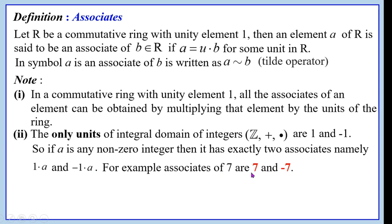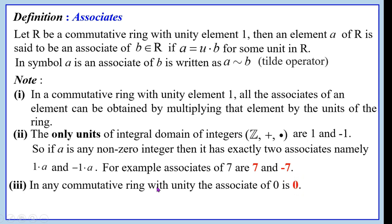The only units of the integral domain of integers are 1 and −1. So if a is any nonzero integer, it has exactly two associates: 1·a and (−1)·a. For example, the associates of 7 are 1×7 = 7 and (−1)×7 = −7. In any commutative ring with unity, the associate of 0 is 0.